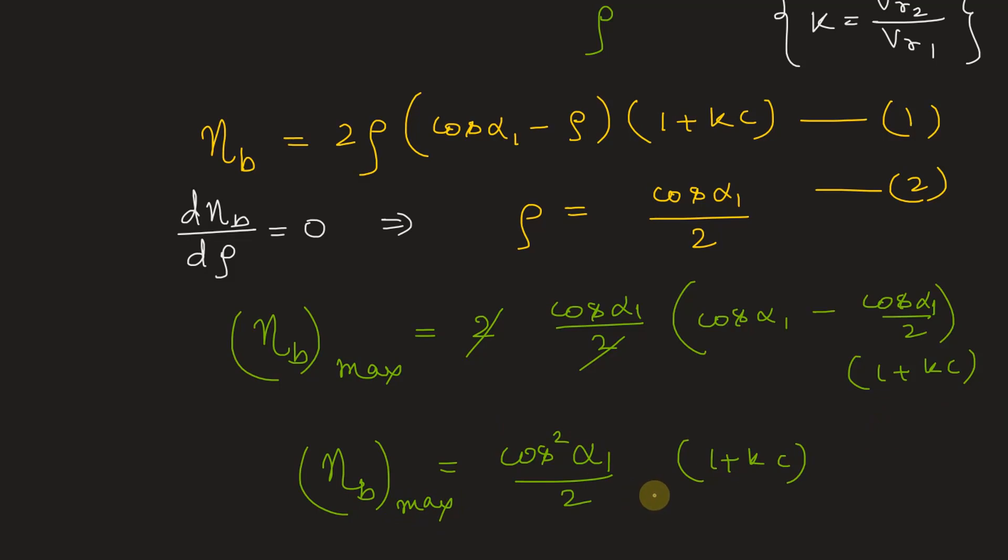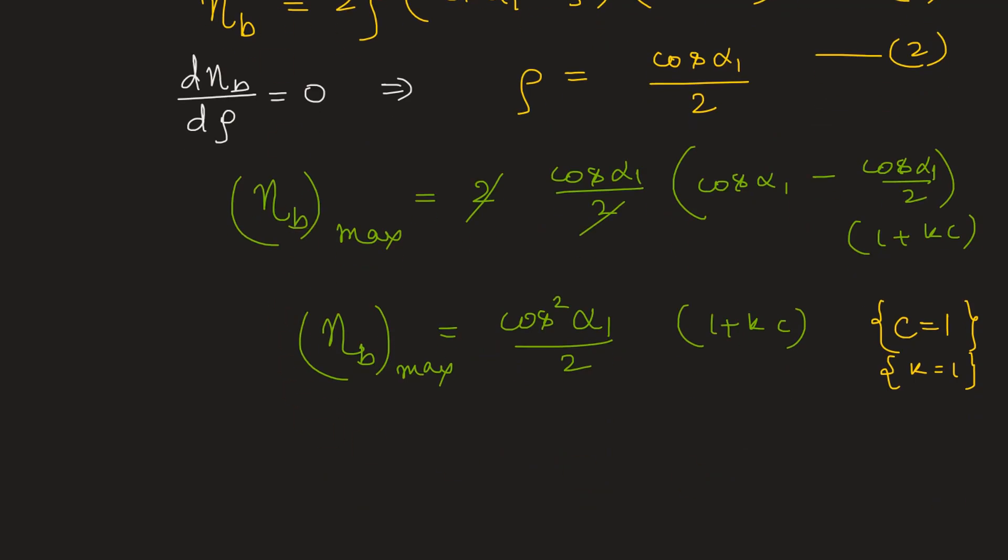All right. Now if the blade is equi-angular, that means c will be equal to 1 and we are also neglecting the friction, so this value k will also be equal to 1. Okay. Therefore, we can write the expression of maximum blade efficiency, eta B max will be equal to cos square alpha 1, 1 by 2 into 2. So this will be equal to cos square alpha 1.